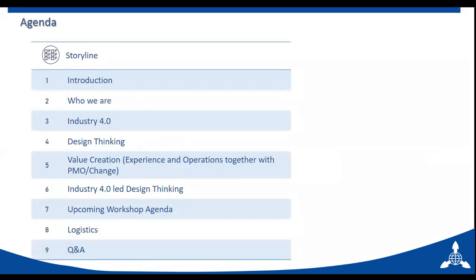A quick storyline: we've done introductions, then we'll talk briefly about Amploo, what is Industry 4.0, and then design thinking. We'll bring design thinking and Industry 4.0 together in value creation. We also have a workshop — a couple of days in October, tentatively fixed for October 18th and 19th, Friday and Saturday. After this webinar, a link will be up to register. We'll also talk about logistics for the workshop and finish with some Q&A.